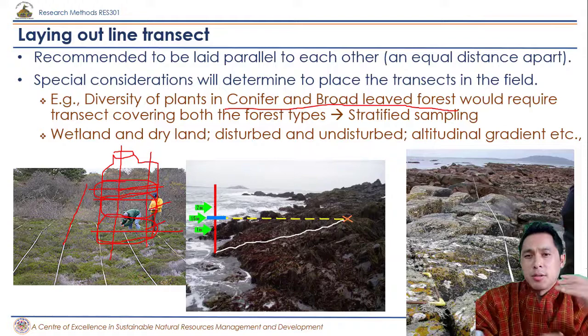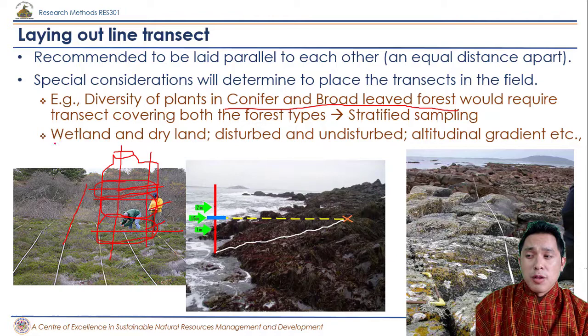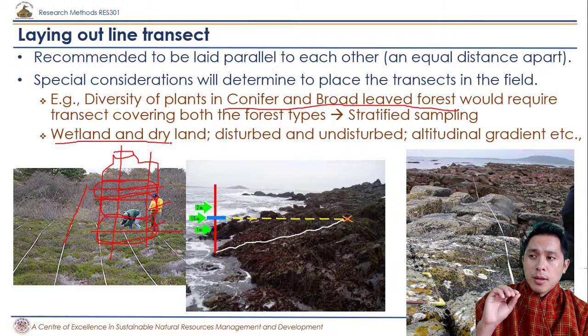When studying vegetation over an altitudinal gradient, laying the transect through the gradient is essential. When looking at changes in diversity between two forest types, the transect must traverse through both forests. When studying flora diversity from wetland to dryland, lay the transect from wetland to dryland — not just within one habitat. That is the principle for how to lay out transects.